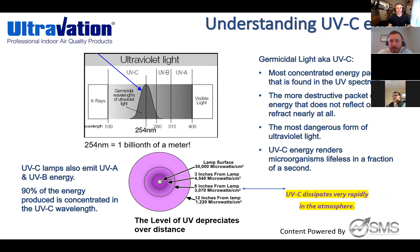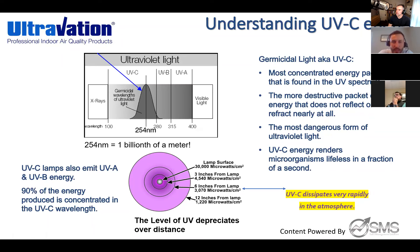To understand UVC energy, look at the ultraviolet light chart — when you see UVC on the spectrum in conjunction with UVB and UVA, you can see how potent it is. It is the highest, most concentrated energy packet on the UV spectrum. It is the most destructive packet of energy that does not reflect or refract nearly at all — the most dangerous form of ultraviolet light. UVC energy renders microorganisms lifeless in a fraction of a second. It is extremely dangerous but extremely efficient, which is why it is recommended.